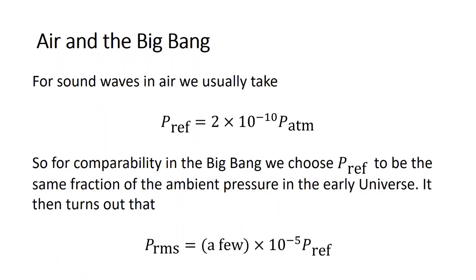So let's just apply this to air and the Big Bang. We're quite familiar with sound waves in air and we know what amplitude of fluctuations we can actually hear. And for that reason, the reference pressure is chosen so that zero decibels is at the threshold of human hearing. And it turns out that that level is something like 10 to the minus 10 times atmospheric pressure. So a sound wave of that kind of amplitude, typical amplitude, would be inaudible because it's lost in the ambient pressure.